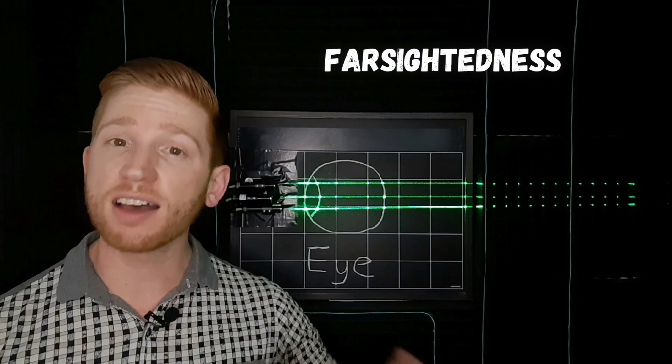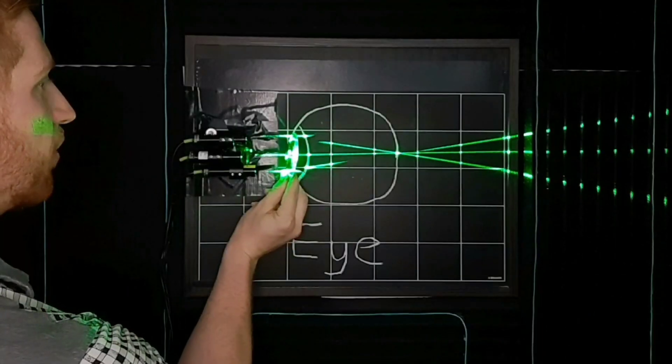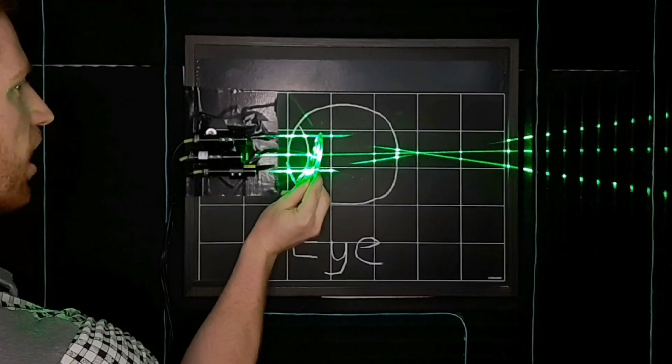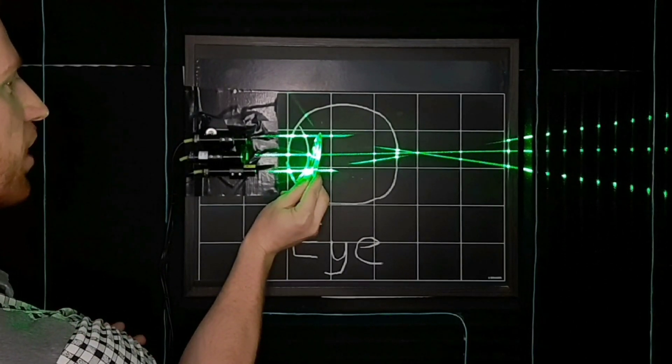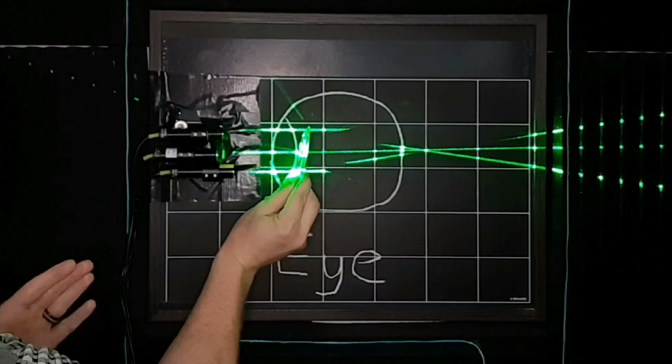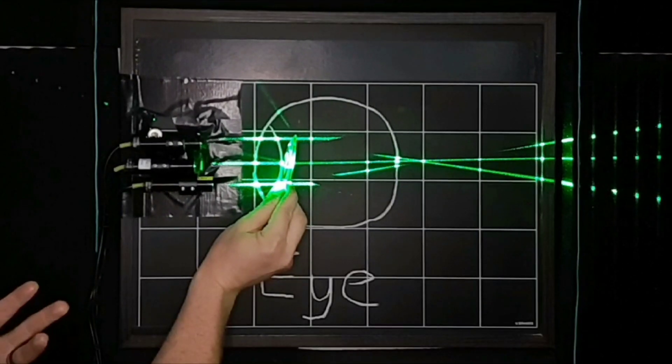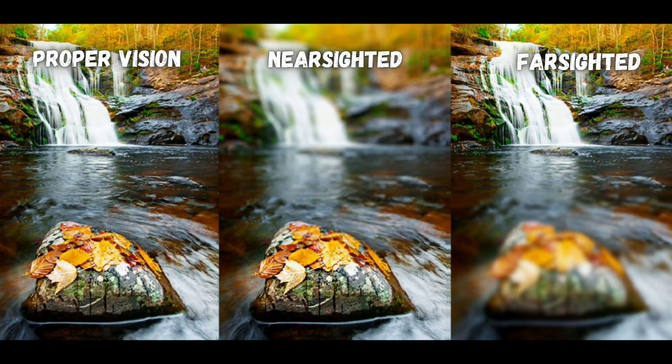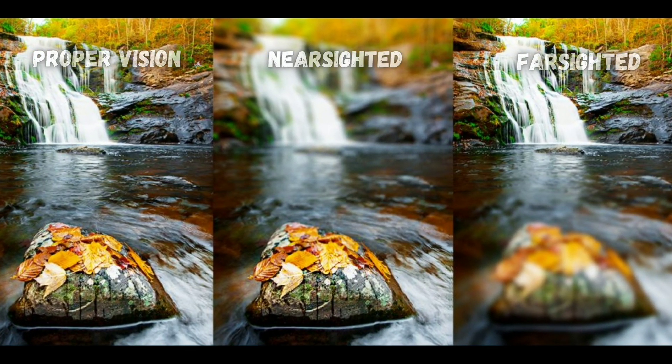Farsightedness on the other hand is the opposite of this. So instead of your eye focusing light sooner than it should, farsightedness is your eye trying to focus light later than it should. So you can see it's hitting your retina before the light comes to a point of focus, and again that makes your vision blurry. If you have farsightedness, things further away are more in focus while things up close to you are more blurry.